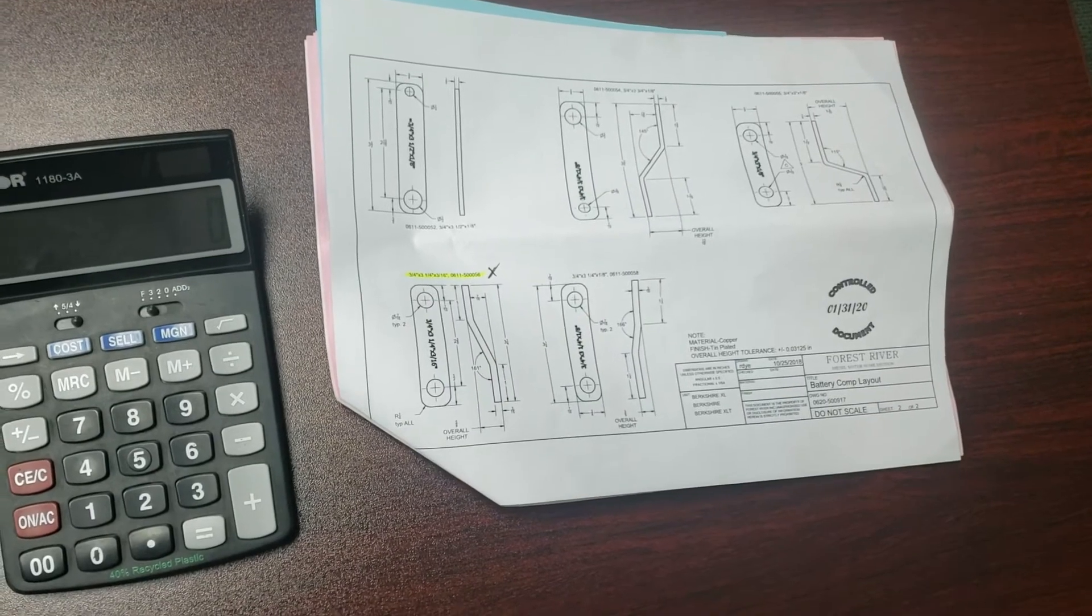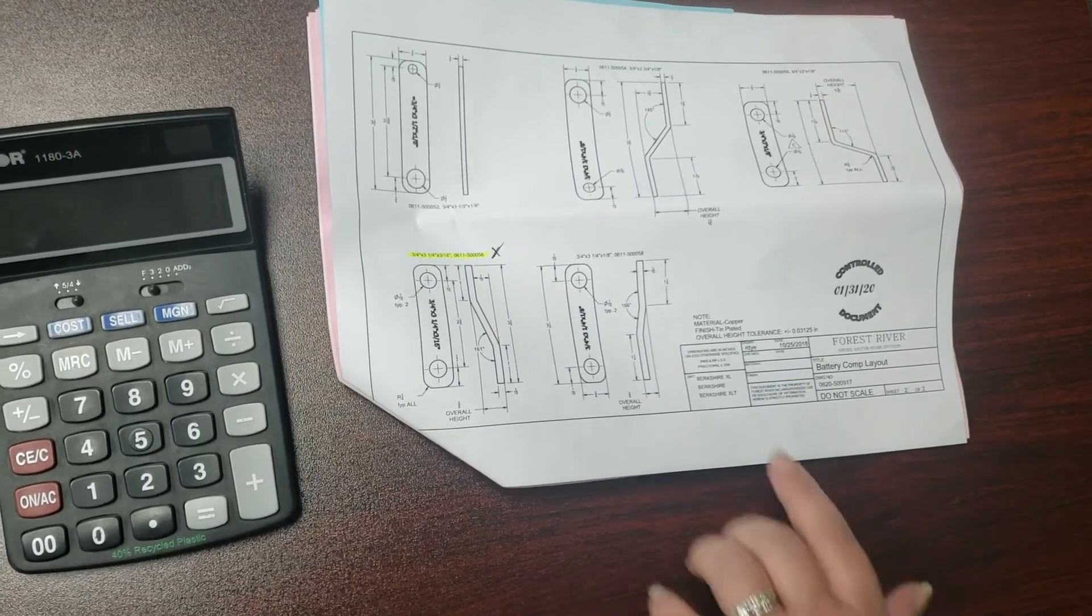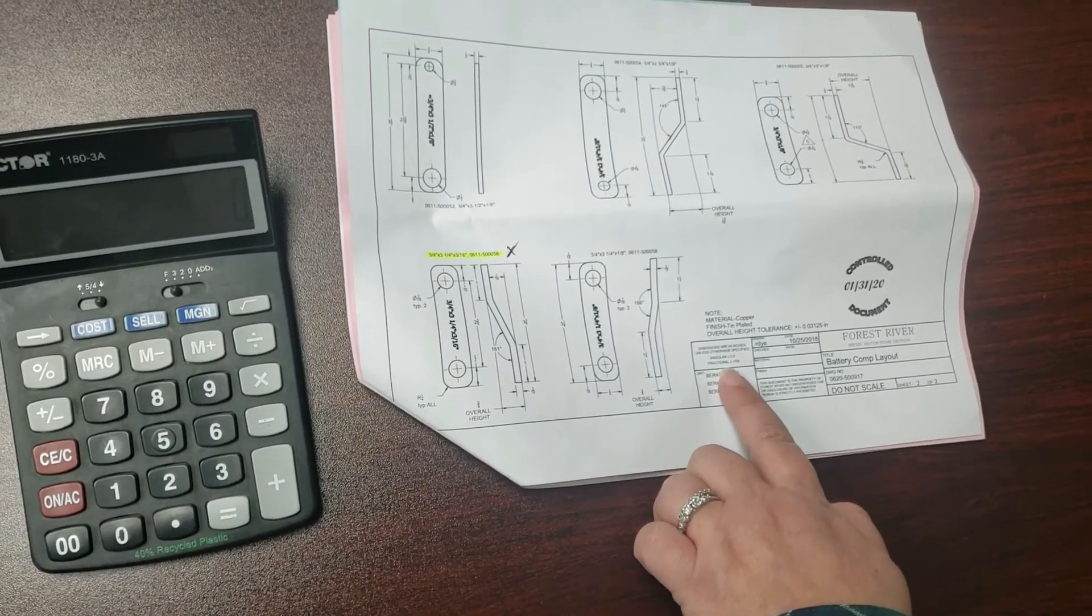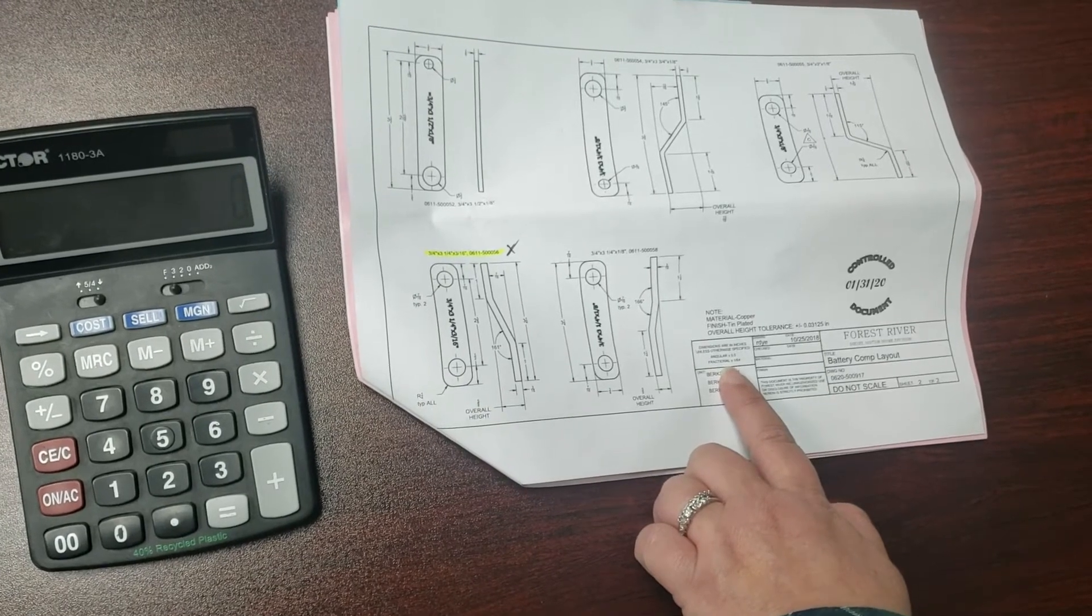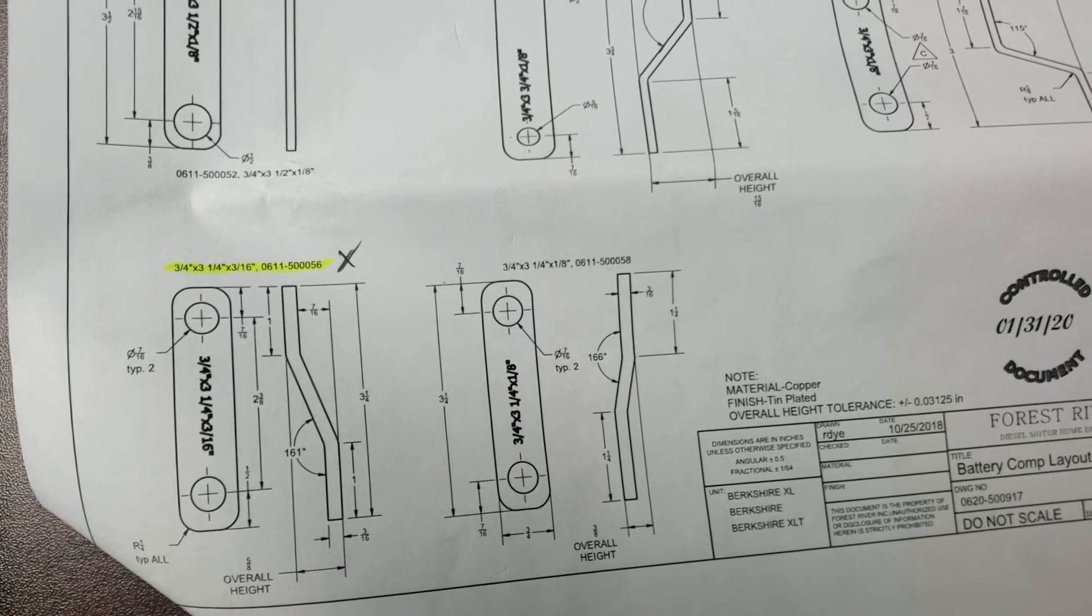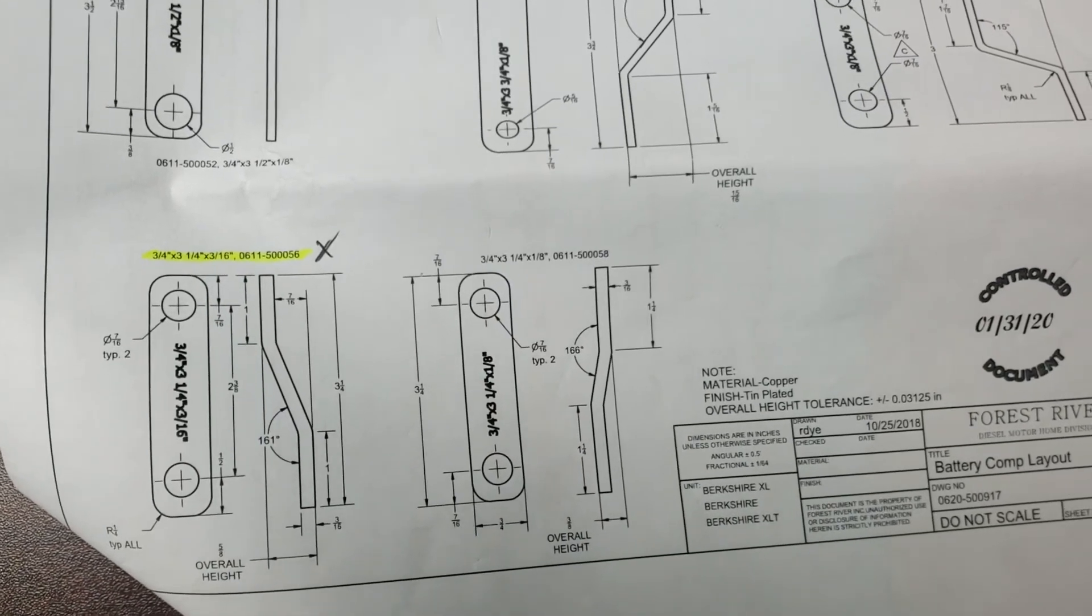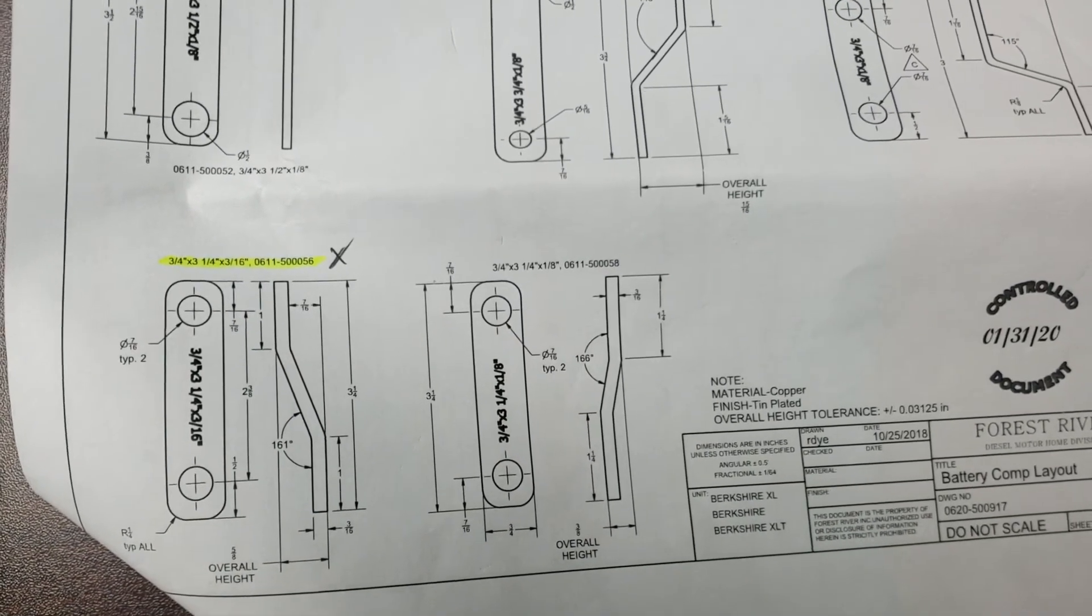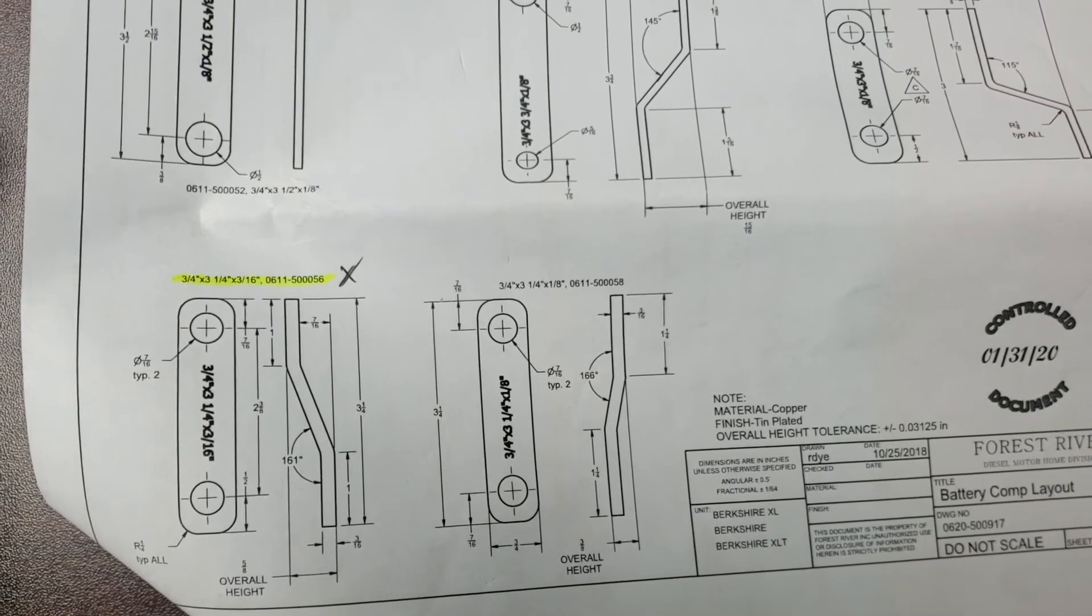Then, using the drawing tolerance block, determine if the hole diameter is within tolerance. If the hole diameter is not within tolerance, stop now and make adjustments as needed.